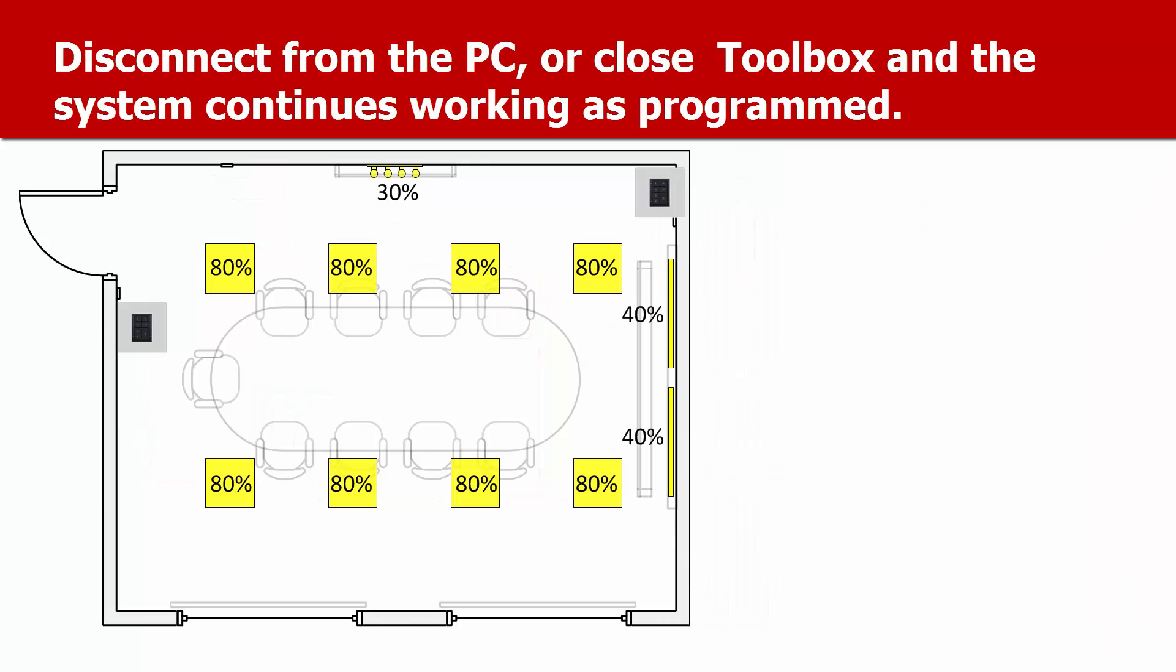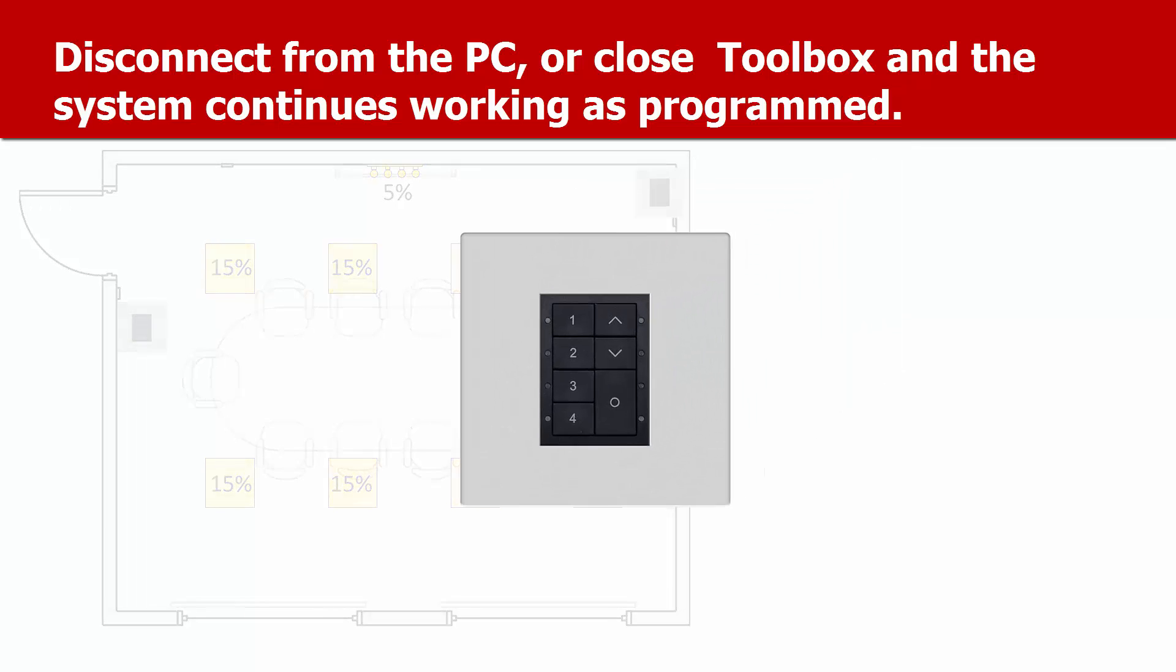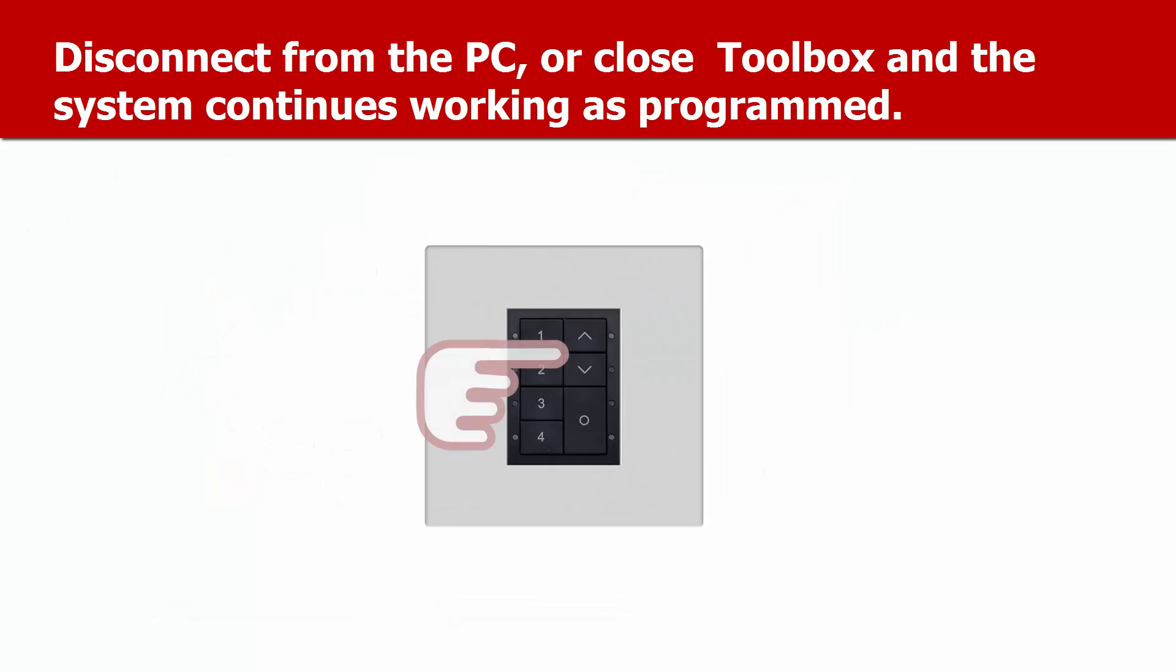We've set up a system that lets people press one button for when they're holding a normal meeting, and another button for when the presentation screen's being used. The lights can still be adjusted up and down using the up and down buttons on the button panels.